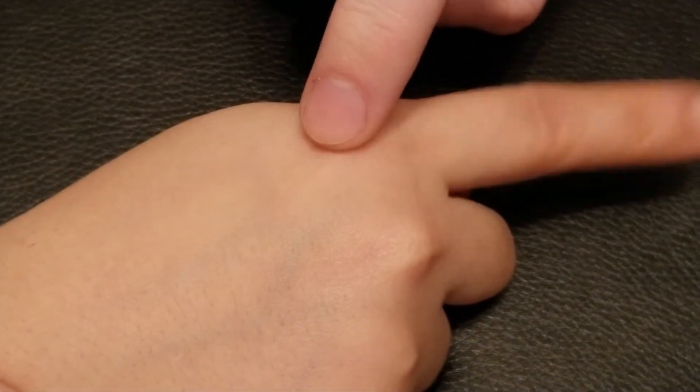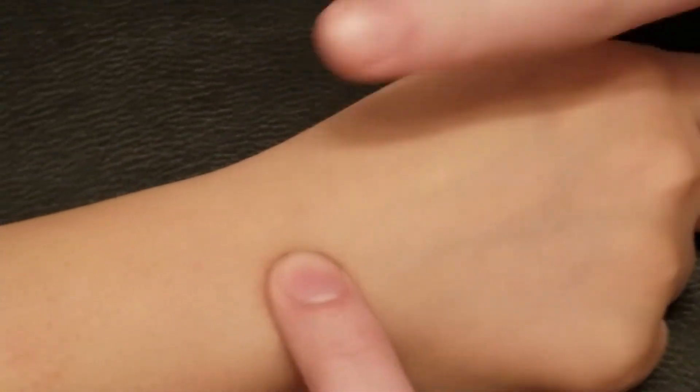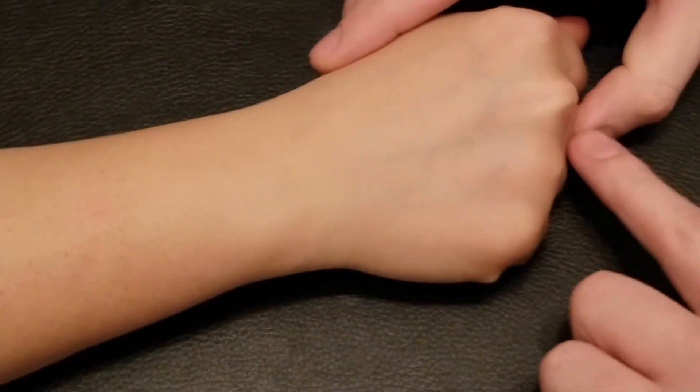Right in this area this tendon is getting pulled over on an oblique angle in comparison to the digitorum tendons which are going straight back. This is why we have this hand in a fist right now—to lengthen all the extensor digitorum tendons.